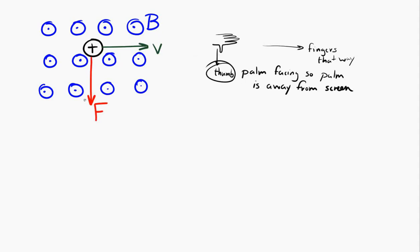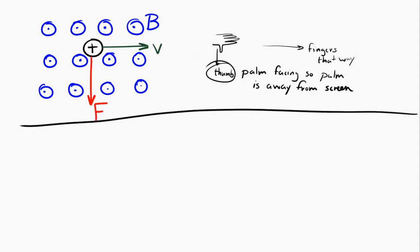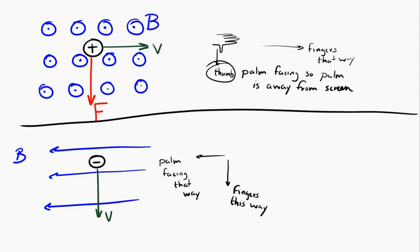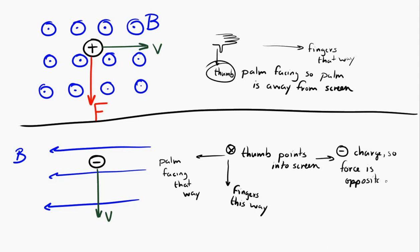Let's try a different example. Let's say we have a magnetic field pointed to the left, and a negative charge moving toward the bottom of the screen. Point your right-hand fingers toward the bottom of the screen. Orient your palm so the magnetic field is coming out of your palm. Your thumb should be pointing into the screen — that would be the direction of the force on a positive charge. However, we have a negative charge, so the force would be the opposite: the force would point out of the screen.